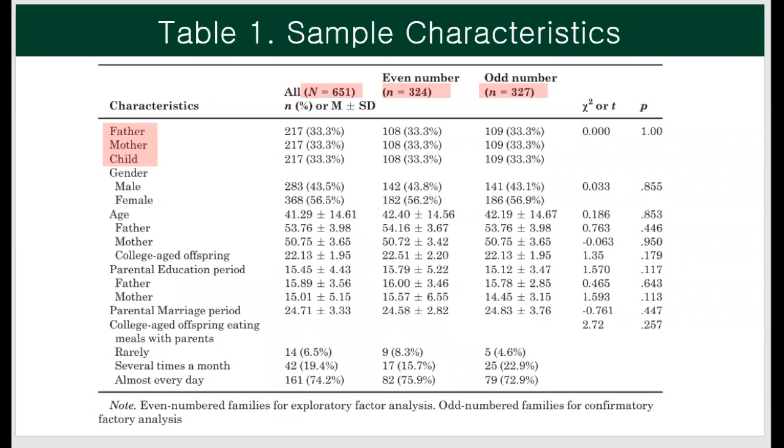Table 1 presents sample characteristics. We collected data from family triads, including father, mother, and college-aged offspring. 217 families, a total of 651 individuals, were split into two samples: one for exploratory factor analysis, and the other for confirmatory factor analysis.